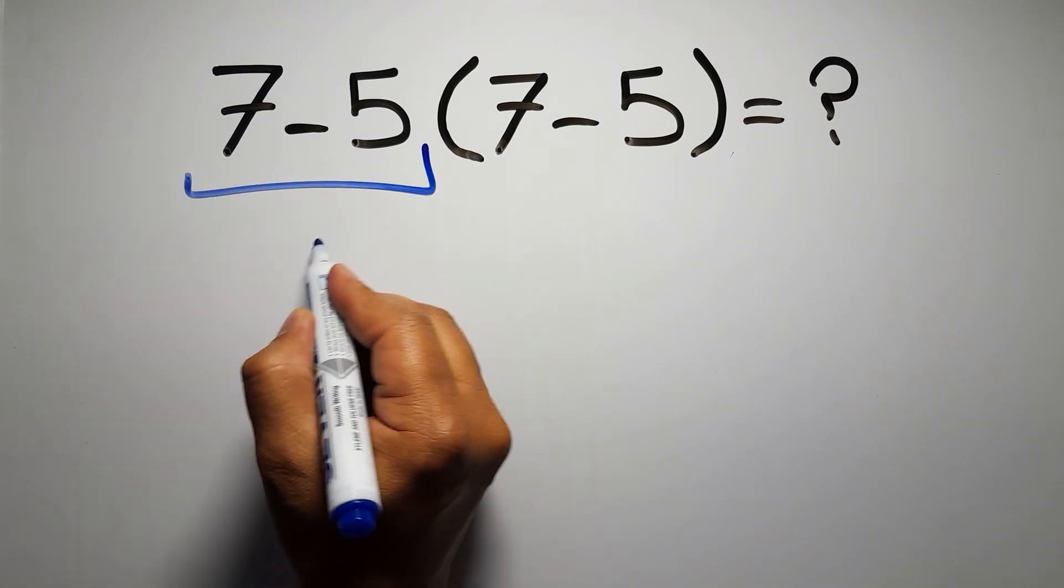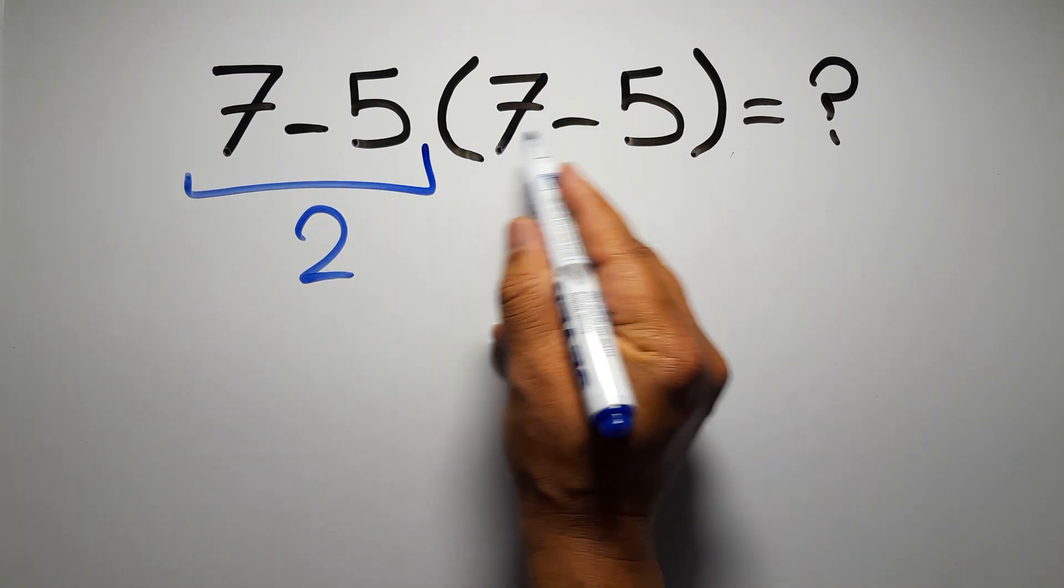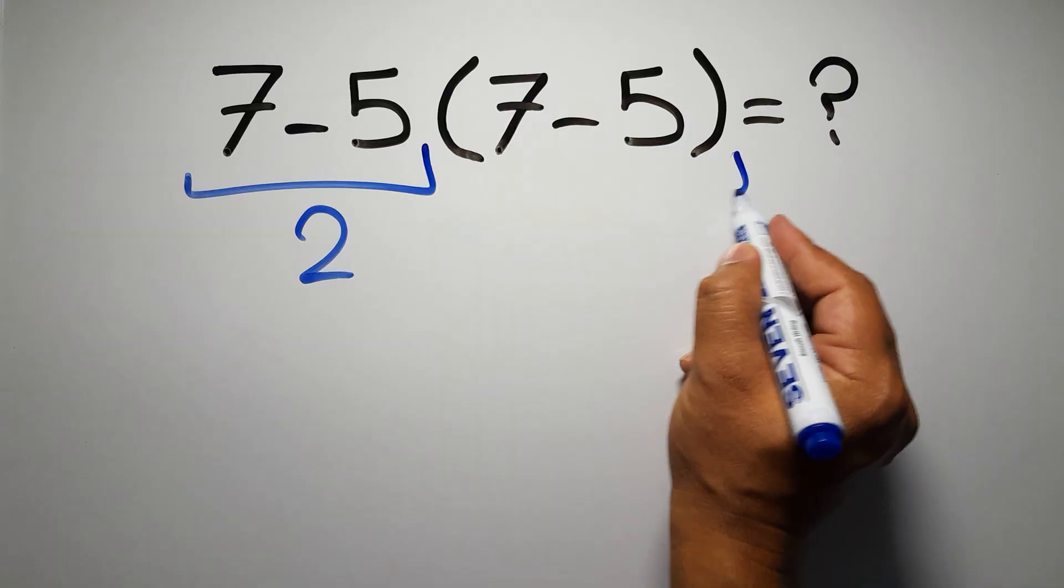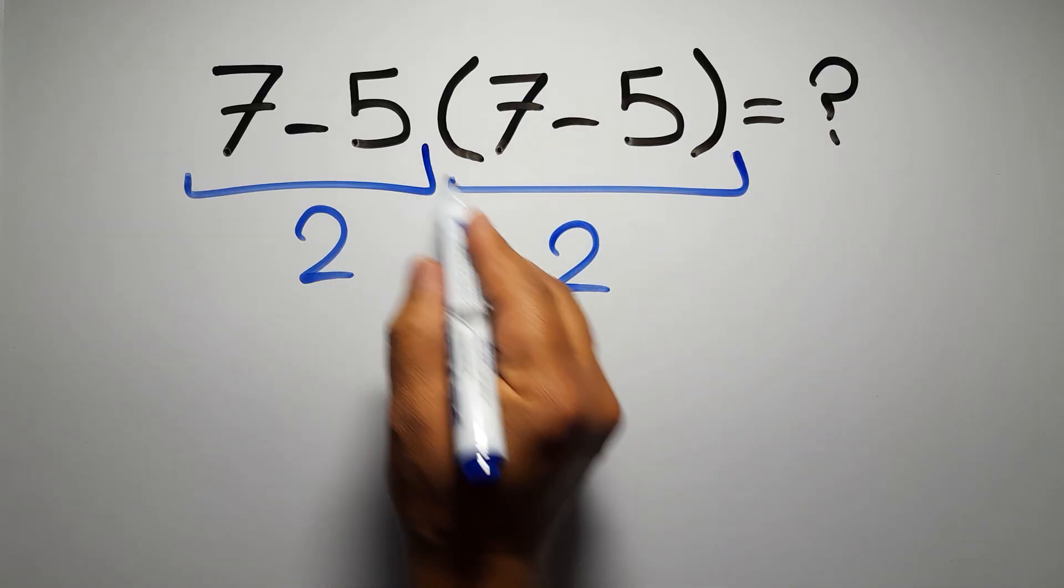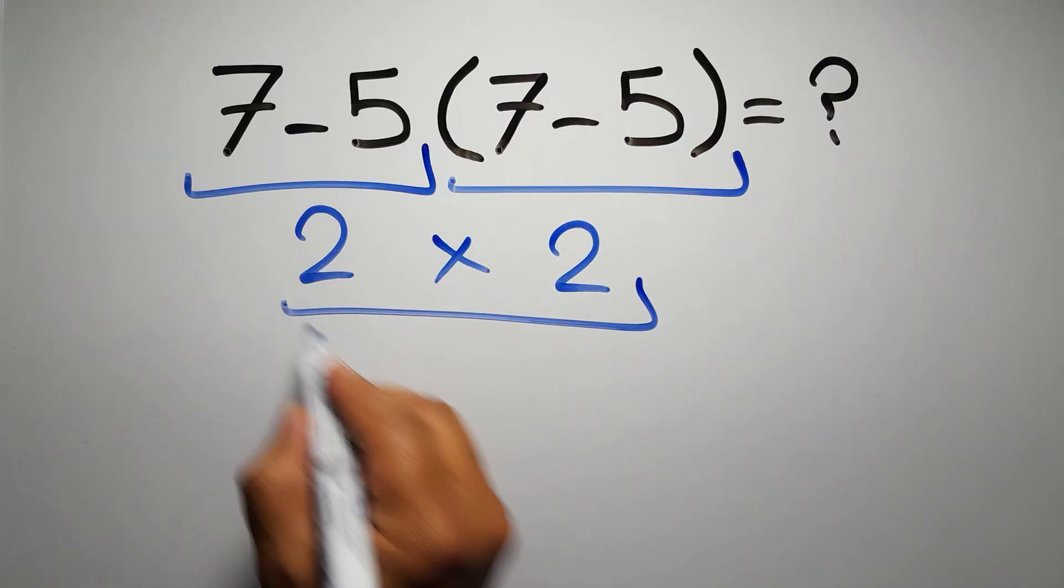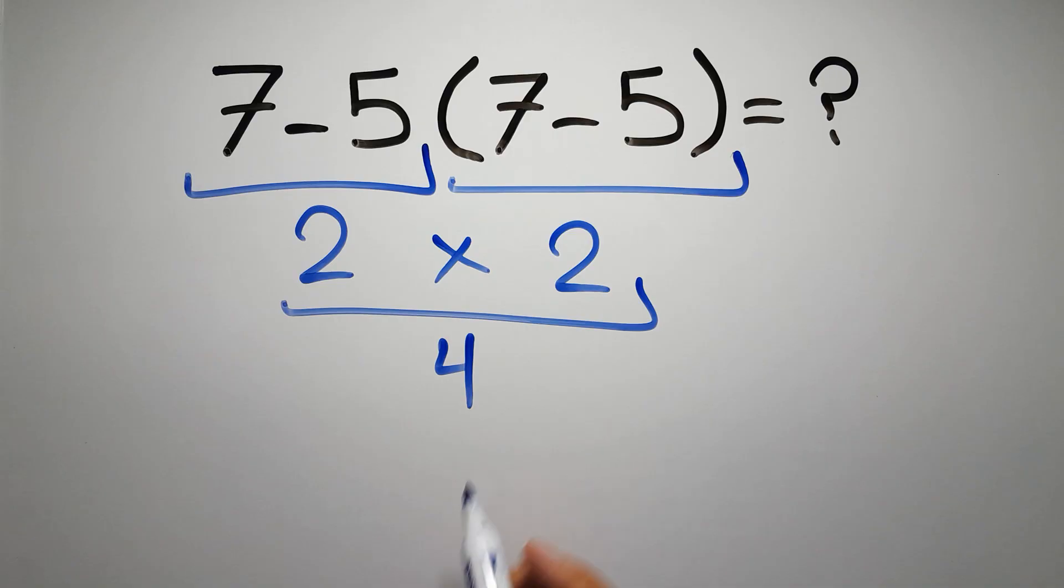7 minus 5 gives us 2, and again here inside this parenthesis we have 7 minus 5, so 2 times 2 which equals 4, but this answer is not correct,